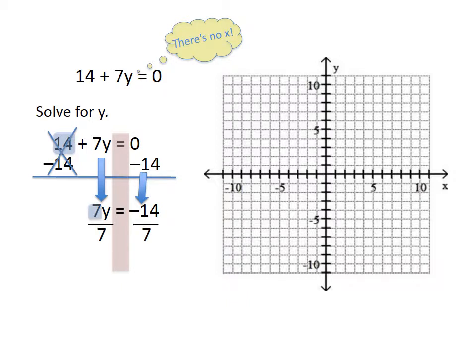Not quite done yet. We need to divide by the 7. So we're going to divide by that 7 on both sides, cancel out, and you get y equals negative 2. All y lines are going to be horizontal. And in this particular example, all points will have a y coordinate of negative 2.